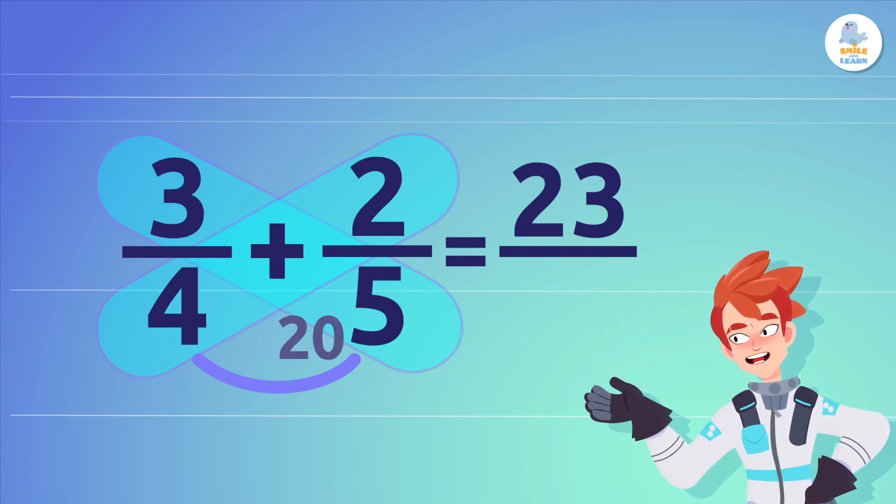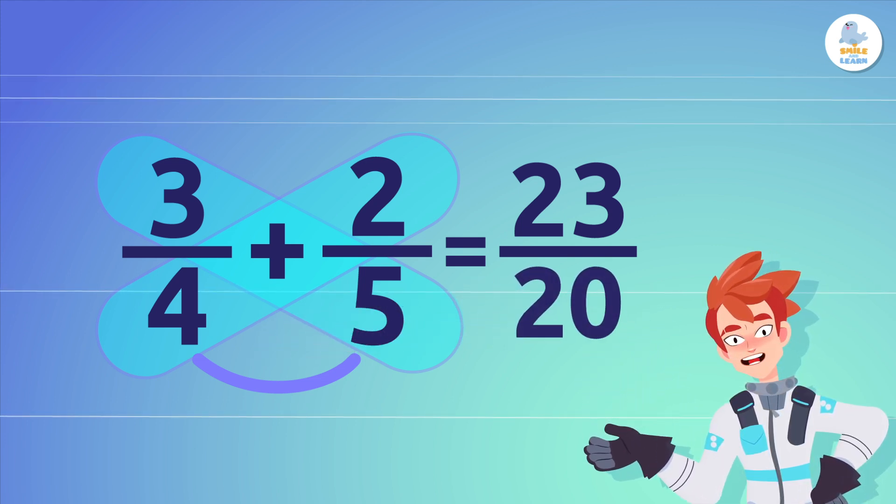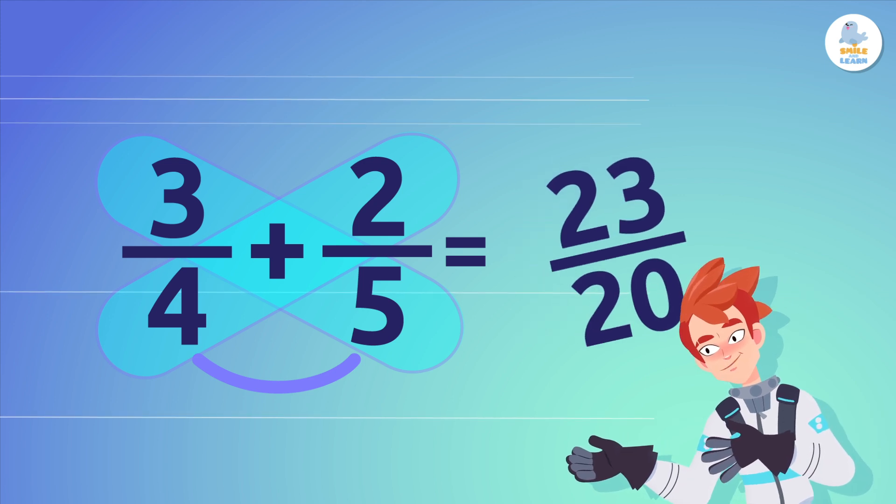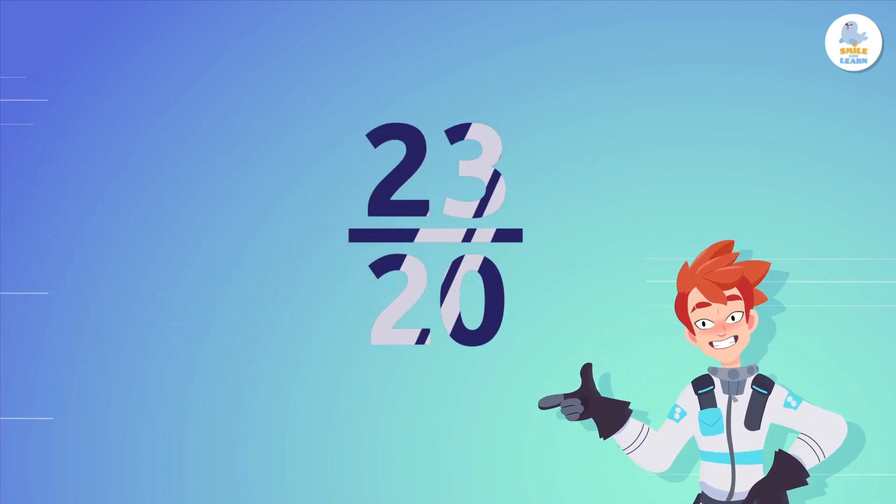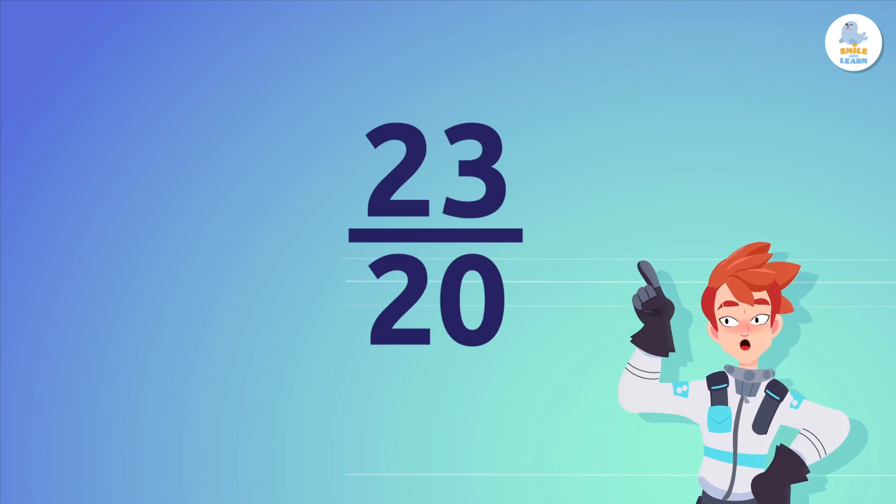Finally, we write the numerator, 23, and the denominator, 20, which gives us 23 over 20. We're finished! See how easy it is?